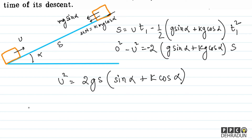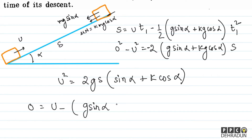We can also write v = u + a·t. Since the final velocity is zero at the top, I can write: 0 = u minus g(sin alpha + k cos alpha)·t1, giving u = g(sin alpha + k·cos alpha)·t1. This equation looks quite helpful.